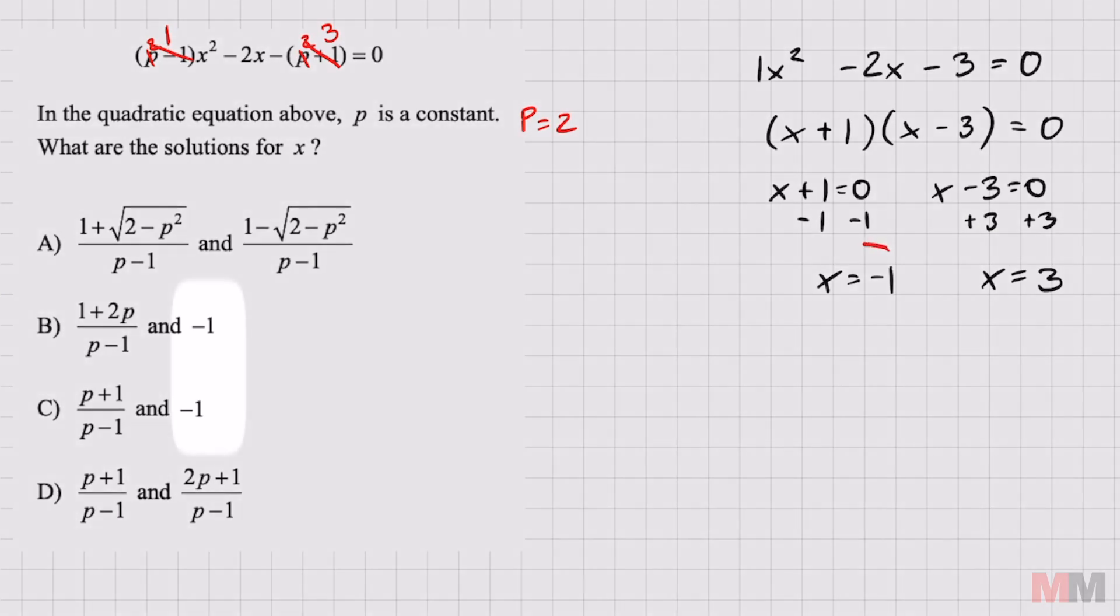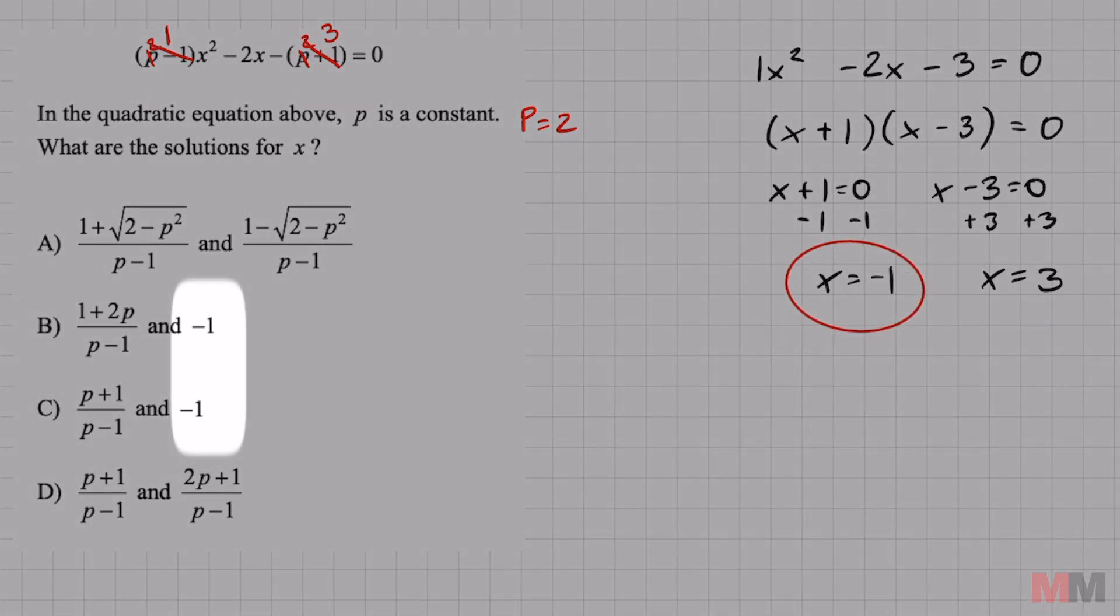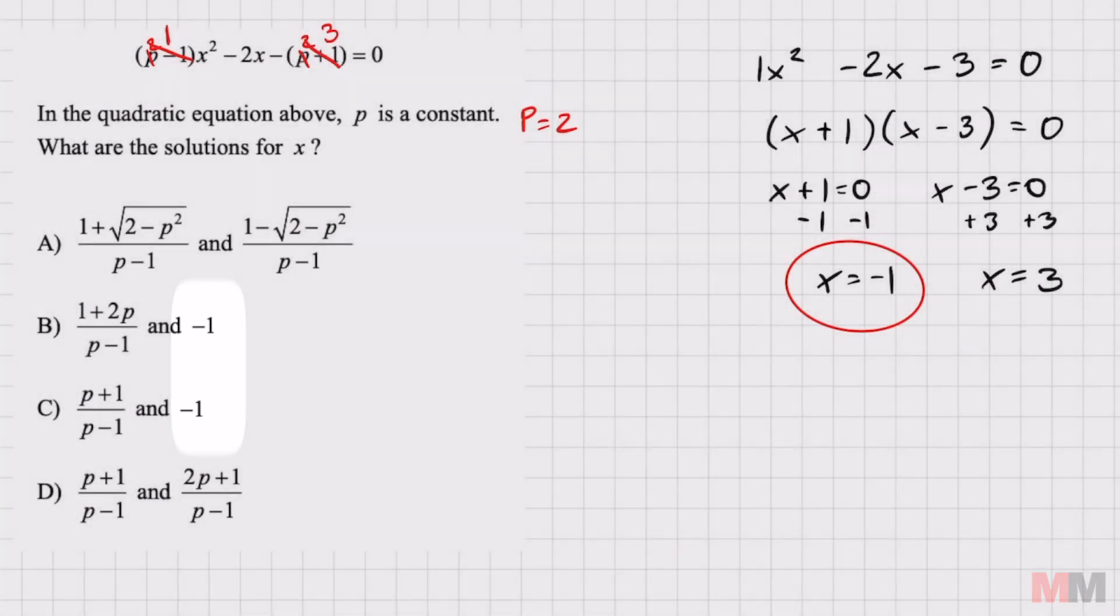So the good thing is that we already see one of the answers right here, x equals negative one. That means if you look back in your answer choices, it cannot be A or D. Only the ones that include negative one right here.